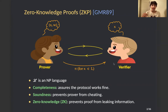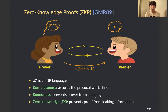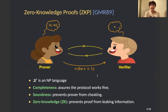Zero-knowledge protocols have three main properties. First is completeness, which assures us that the protocol works completely fine. Second is soundness, which prevents the prover from cheating — in other words, if x is not in the language, the prover should not be able to produce such a proof. The last property is called the zero-knowledge property, or ZK for short, which prevents the proof from leaking any information beyond the fact that x is in the language.